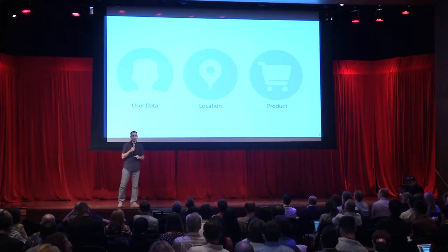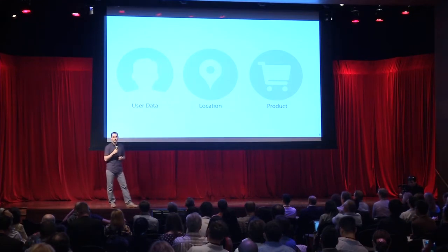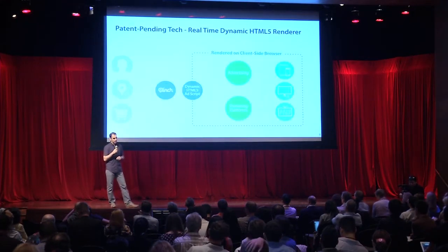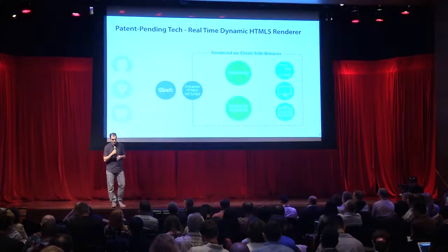The way it works is we combine location, user and product information in real time. Our patent-pending renderer actually transforms that optimized data in real time to dynamic HTML script, which is then rendered on the fly on the user's browser across all devices.